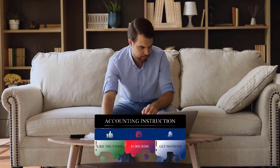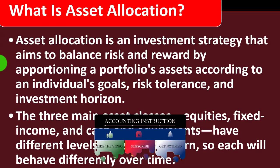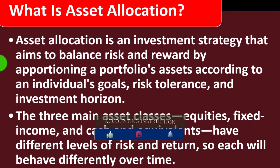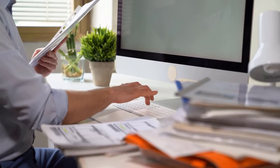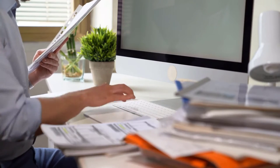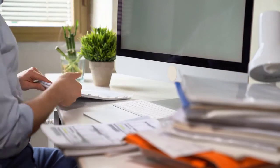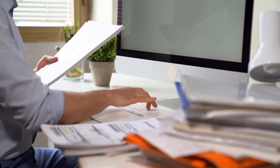We want to consider our asset allocation by looking at our risk tolerance and investment horizon. The three main asset classes — equities, fixed income, and cash and equivalents — have different levels of risk and return, so each will behave differently over time. We can think about breaking out our allocation among these major categories and then go further in depth from there.